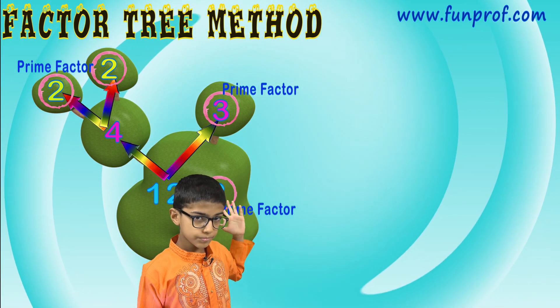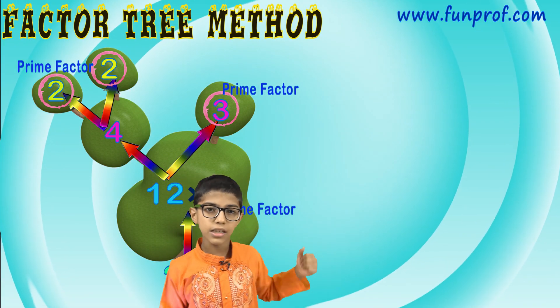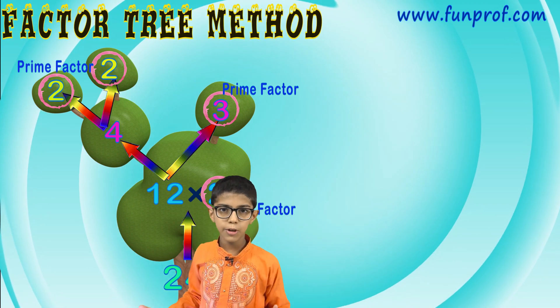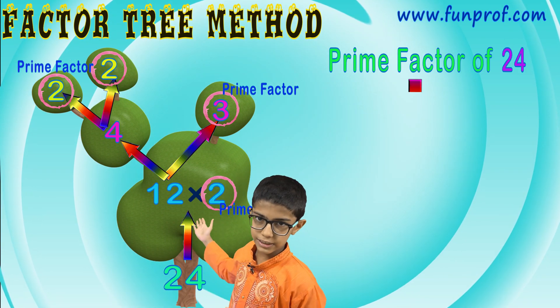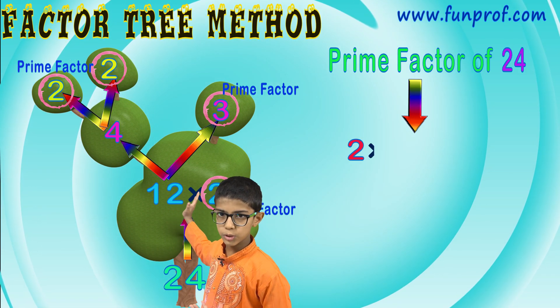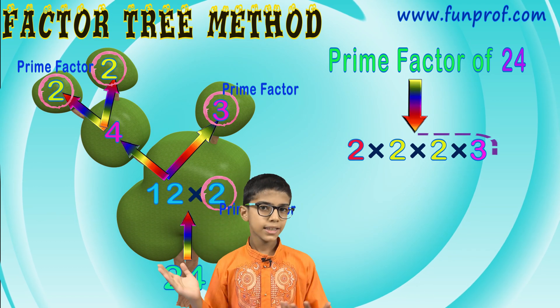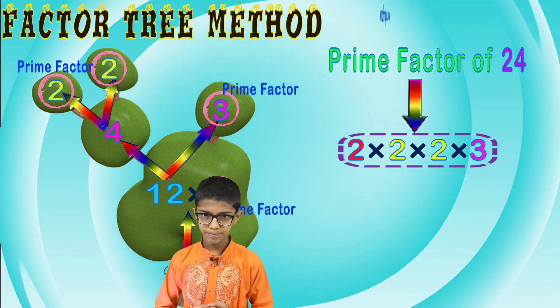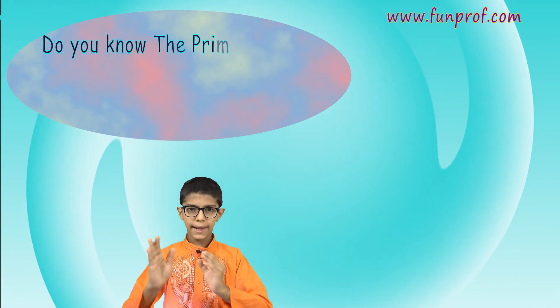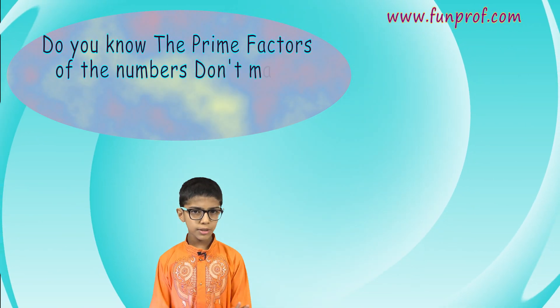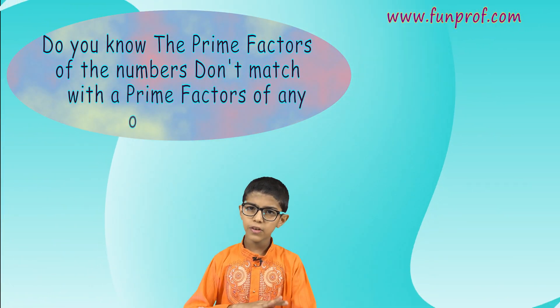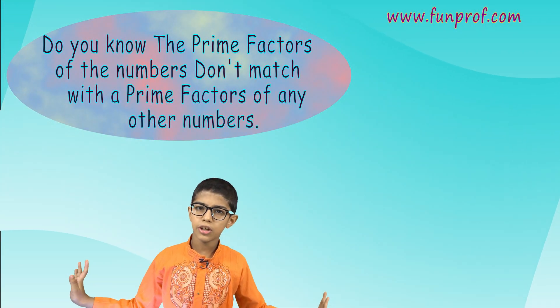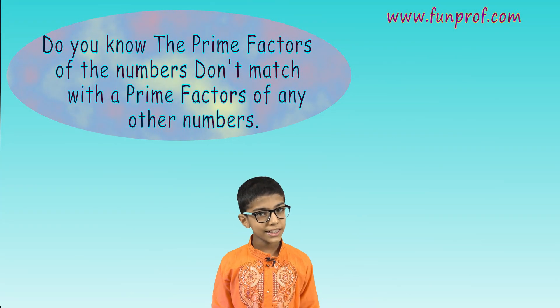We have learned ascending and descending in our previous class. The prime factors of 24 are 2 × 2 × 2 × 3. Let's check — yes, it's 24. An interesting fact: the prime factors of a number don't match with the prime factors of any other number. You can try it!